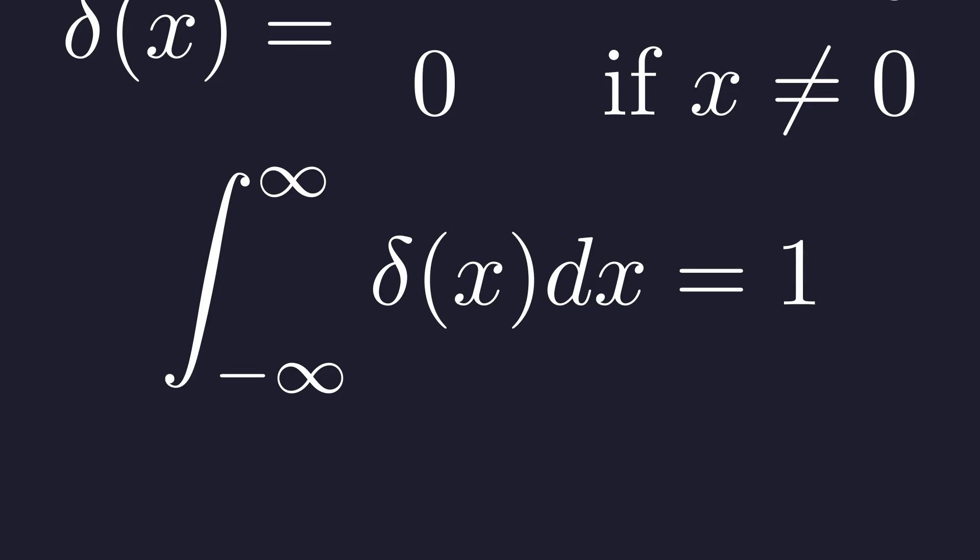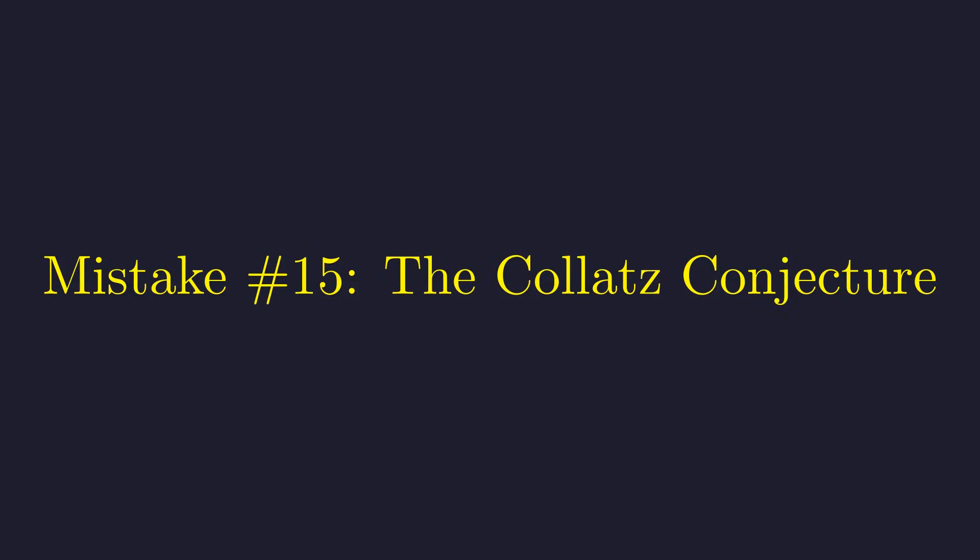We can understand it as the limit of a sequence of normal functions, like these Gaussian curves. As we make them narrower, they must get taller to keep their total area equal to one. The Dirac delta is the conceptual limit of this process.